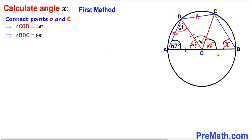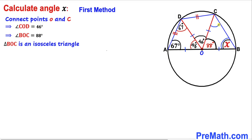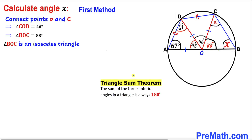We can see that OB and OC are both radii of the circle, so they are equal in length. Therefore triangle BOC is an isosceles triangle, meaning the two base angles are congruent. If one base angle is x, the other is x as well. By the triangle sum theorem, x + x + 88 must equal 180 degrees.